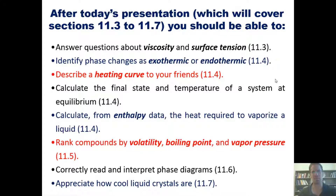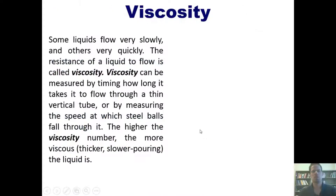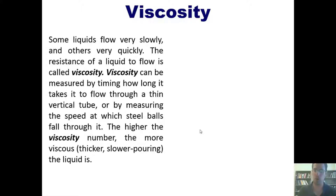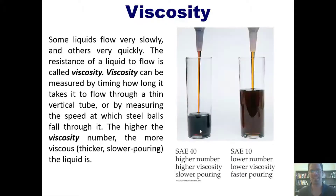Some liquids flow very slowly and others flow very quickly. The resistance of a liquid to flow is called its viscosity. Viscosity can be measured by timing how long it takes for a liquid to flow through a vertical tube, or by measuring the speed at which steel balls fall through it. The higher the viscosity number, the more viscous, thicker, or slower-pouring a liquid is. In this figure we see SAE numbers for two different liquids — the one to the left has a higher number, which means it's thicker, pours more slowly, and is therefore more viscous.